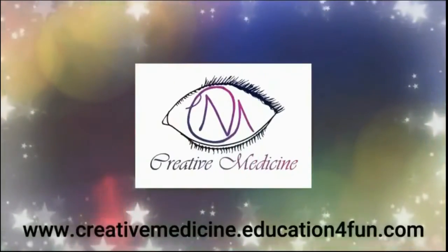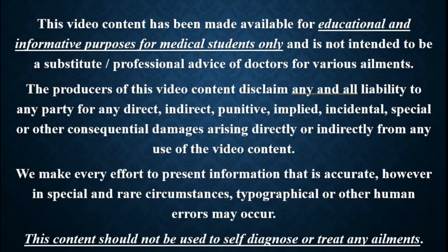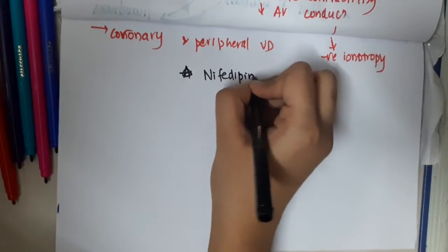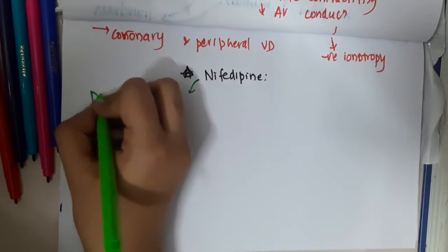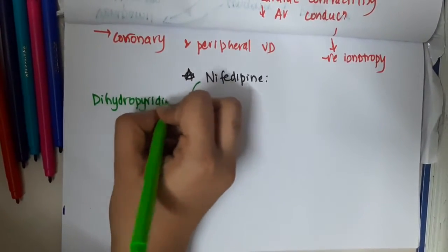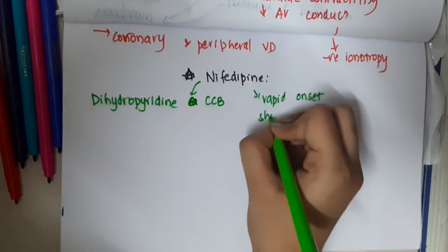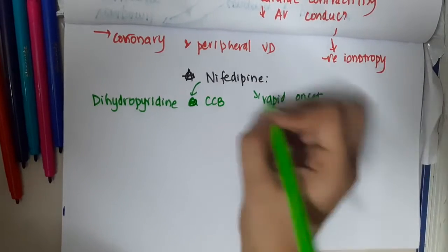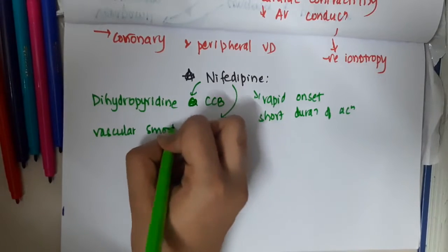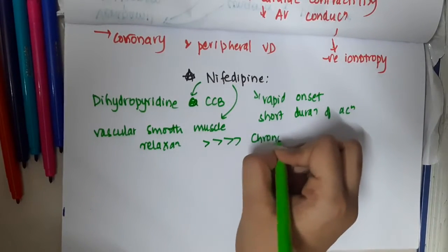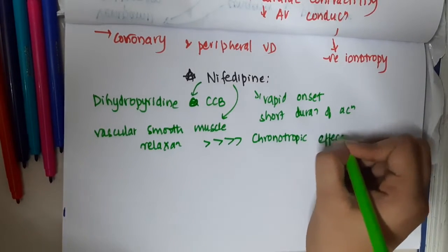Welcome to Creative Medicine. Let us learn some important points about nifedipine. Nifedipine is a calcium channel blocker — specifically a dihydropyridine calcium channel blocker. It has a rapid onset and short duration of action. Its predominant effect is on vascular smooth muscle relaxation, which is far more pronounced compared to its chronotropic effects on the heart.